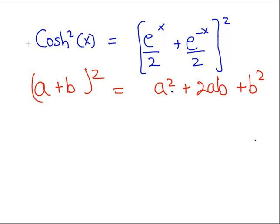Here a squared is equal to e to the power of x over 2. So the square of that is e to the 2x over 4. Similarly b squared would be e to the minus 2x over 4.